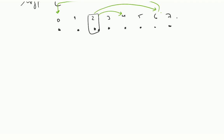What will happen in the third iteration? Node 6 will send to 7. There is no backward communication in this one.